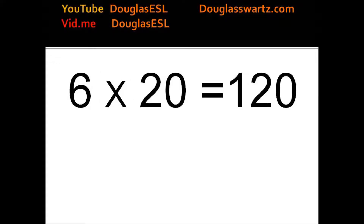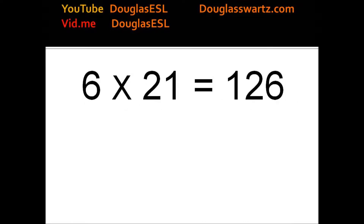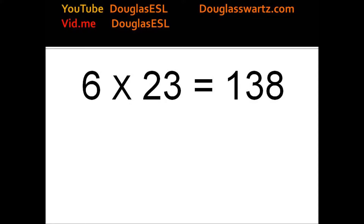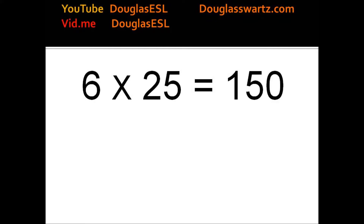6 times 20 equals 120. 6 times 21 equals 126. 6 times 22 equals 132. 6 times 23 equals 138. 6 times 24 equals 144. 6 times 25 equals 150.